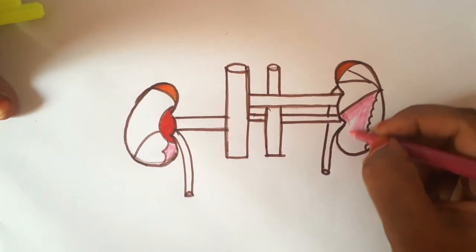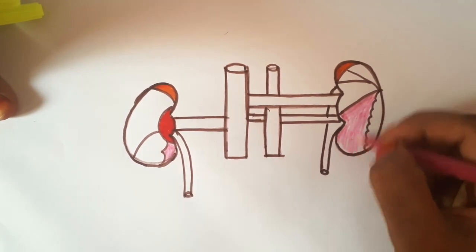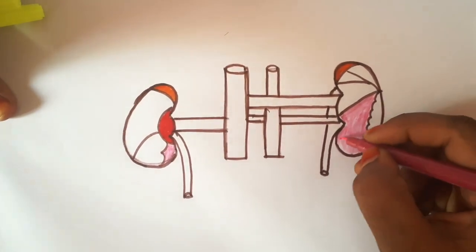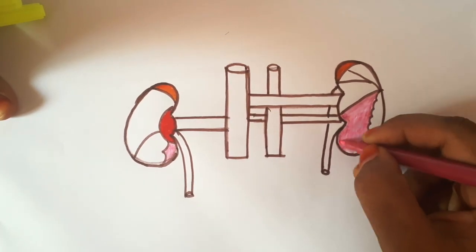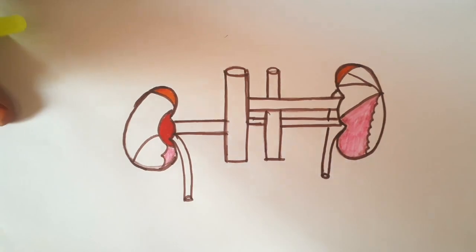So now I am coloring both right and left kidneys. This part of left kidney is jejunal area. This pink color part is jejunal area, it gives relation to the jejunum.